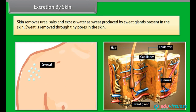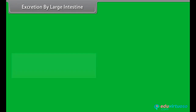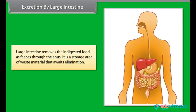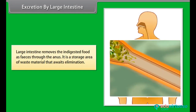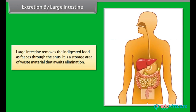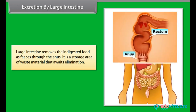Sweat is removed through tiny pores in the skin. The large intestine removes indigested food as feces through the anus. It is a storage area of waste material that awaits elimination.